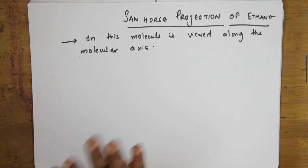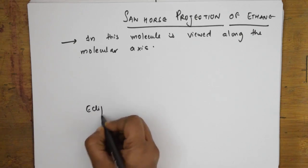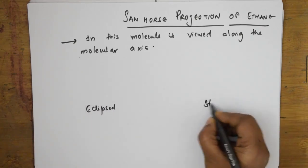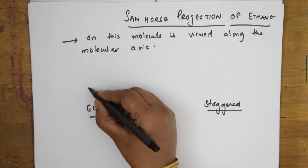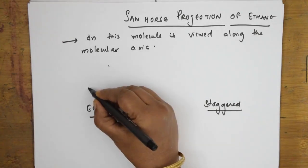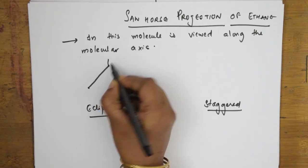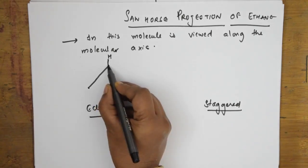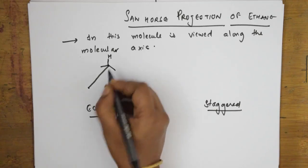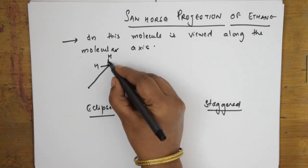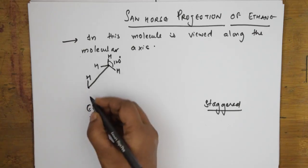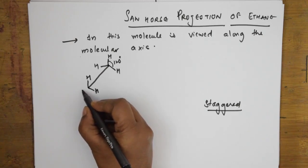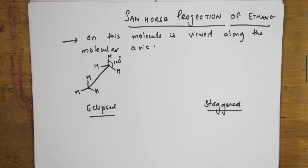First, I am going to show the eclipsed form of ethane (C2H6). Here is one carbon, here is another carbon. One hydrogen, one more hydrogen at 120 degrees — this is the eclipsed form.